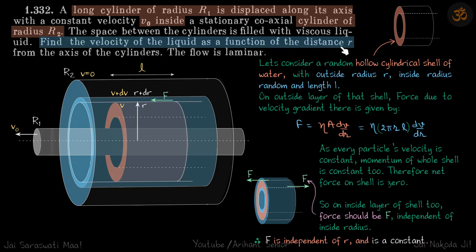We need to find the velocity of the liquid as a function of distance r from the axis of the cylinders. The surface of the inner cylinder moves at v₀; the liquid touching the outer cylinder is at rest. In between, there will be a function of velocity changing from zero to v₀, and we need to find what that function is.